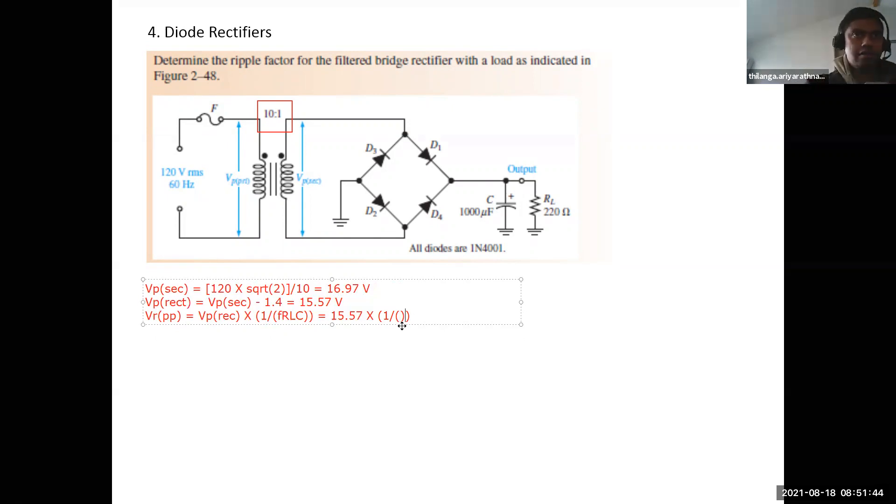Good, very good, one twenty. Multiplied by RL, it is given, that is 220 ohms. OK. What will be capacitance? It is also given thousand microfarad. OK, thousand multiplied by because it is microfarad, 10 to the power negative six.